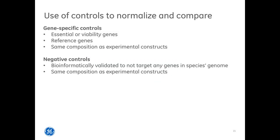The gene-specific controls include essential or viability genes expected to be depleted by the T1 time point, providing confidence that your screen worked. They also include reference genes not expected to change in abundance for most phenotypic assays. The negative controls are designed bioinformatically to not target any gene in the human, mouse, or rat genome. These are important for normalization and establishing cutoff criteria for hit identification. Importantly, all gene-specific and negative controls are the same composition as the experimental shRNA or sgRNA constructs.